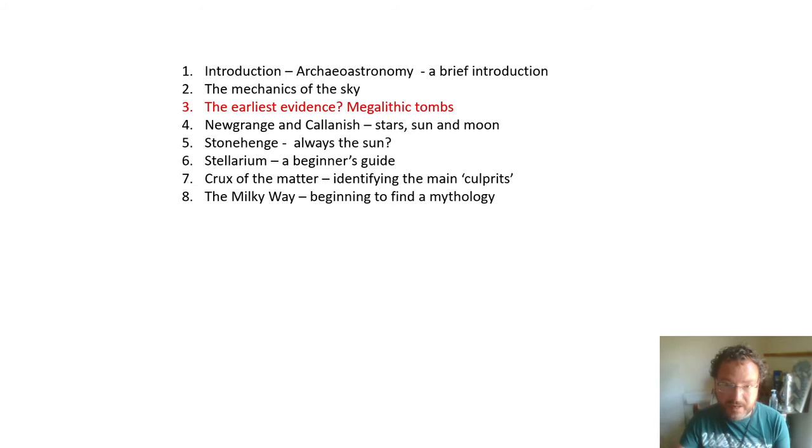So on to part three now. We're going to look at sites in Britain that preceded henges and other circular sites to see whether there's any evidence of solstitial or stellar alignments. As these were the precursors to later ritual sites, if we find evidence here then it's indicative that it was inherent in the culture, so when we find them in henges we can see it's part of an ongoing process.